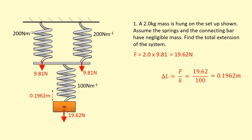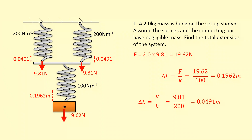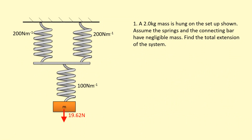For the top two parallel springs, each gets half the force: 19.62 ÷ 2 = 9.81 N per spring. Using Hooke's Law with 9.81 N and a spring constant of 200 N/m, each top spring extends by 0.0491 m. Adding the two extensions together — 0.1962 + 0.0491 — gives a total extension of 0.245 m. That's the direct method.